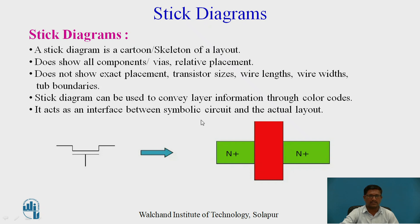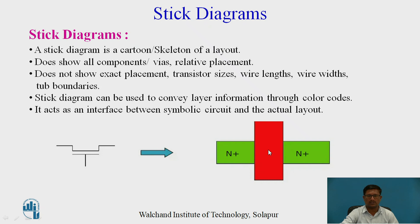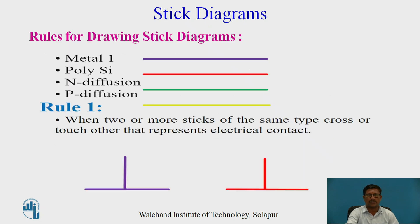The stick diagram acts as the interface between the symbolic circuit and the actual layout. The symbolic circuit refers to the schematic related to a particular logic — for example, the symbol of an NMOS transistor is the schematic. In the layout, the NMOS has N-diffusion with polysilicon crossing it to represent the gate. This is what we use in the stick diagram.